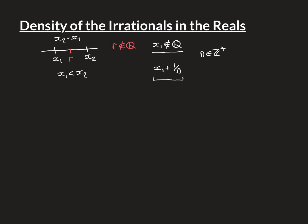This value x1 plus 1/n is going to be an irrational number because x1 is irrational. To prove that, suppose for contradiction that x1 plus 1/n was a rational number q. Then subtracting 1/n from both sides gives x1 = q minus 1/n. But 1/n is a rational number, and subtracting a rational from a rational gives a rational, so x1 would be rational — a contradiction. Therefore x1 plus 1/n is always irrational, and hence we have found an irrational number between x1 and x2.